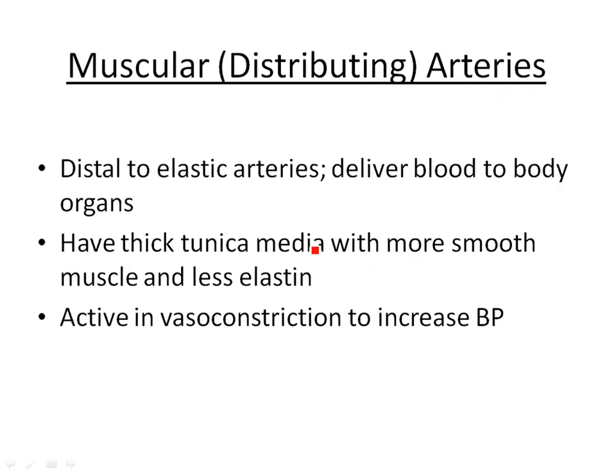The next vessels as you leave the heart are the muscular arteries, also known as distributing arteries, because they distribute and carry blood out to the body and all the different organs. These have a thick tunica media — sometimes as many as 3 to 40 layers of smooth muscle. They don't have as much elastin because they're not under quite as much pressure as vessels near the heart, but they need more muscle because they're very active in the vasoconstriction process.